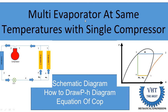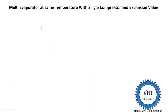The multi evaporator system is generally used for different cold storage and in dairy, where they require maintaining different temperatures. In dairy, it is required to store butter, milk, drinking water — they require different temperatures. But in this video I explain it for the same temperatures.